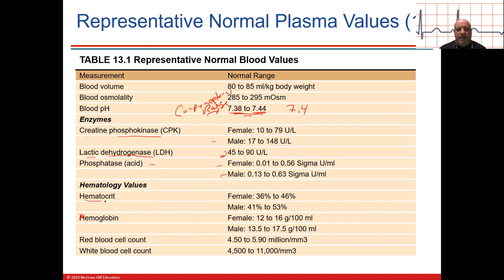The hematocrit is how much hemoglobin in red blood cells you have total. These are important values. For females it's up to 46%; below 36% is low. Males are 41–53%. Hemoglobin is really important because if it drops, you fall into anemia. The range is 12–16 for females and 13–17.5 for males.